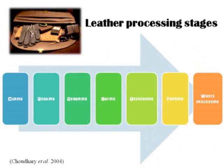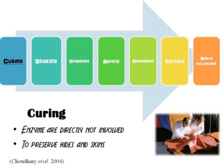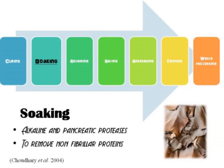In the leather industry, there are several leather processing stages, including curing, soaking, de-hairing, baiting, degreasing, tanning, and waste processing. In the curing stage, although enzymes are not directly involved, it is used to preserve hides and skins. Next, alkaline and pancreatic proteases are involved in the soaking stage to remove non-fibrillar proteins.